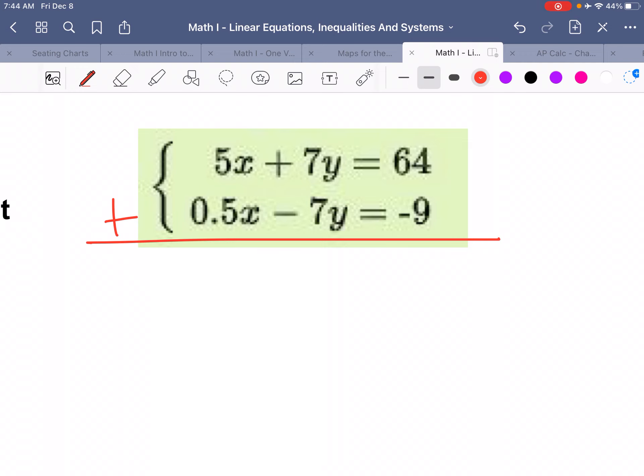5x plus 0.5x is 5.5x. 7y plus negative 7y, this is why we're adding the equations together. Those cancel each other out.